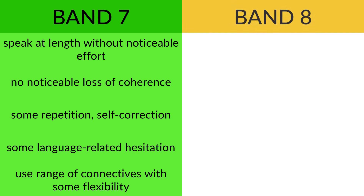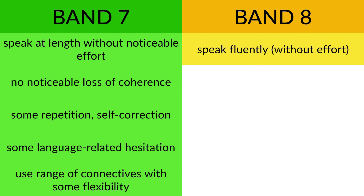What about band 8? At band 8, a candidate speaks fluently without effort — it's pretty easy for them to speak at length. They develop the topic in a coherent and very appropriate way. Even at band 8, they might still repeat themselves or correct themselves — for example, saying 'the person which... who' if they've used the wrong relative pronoun.